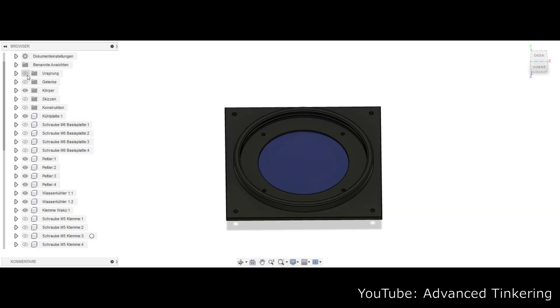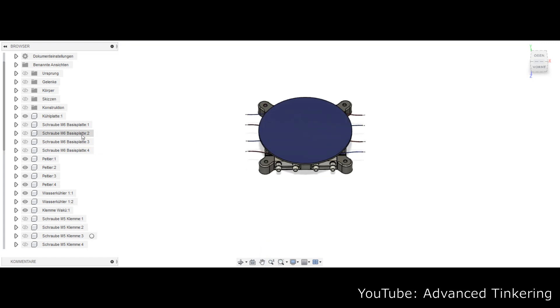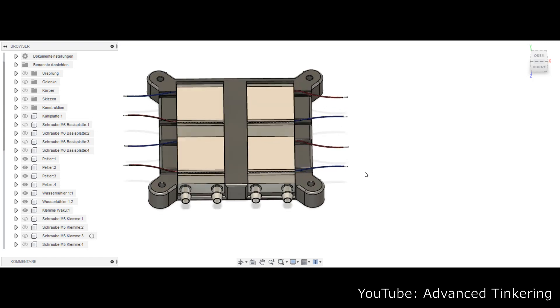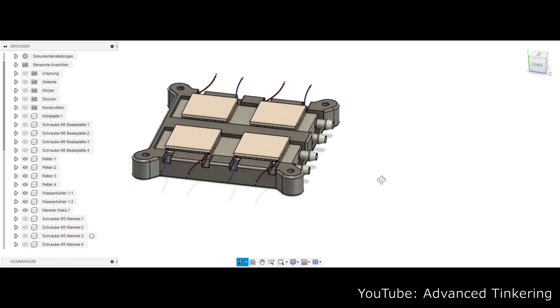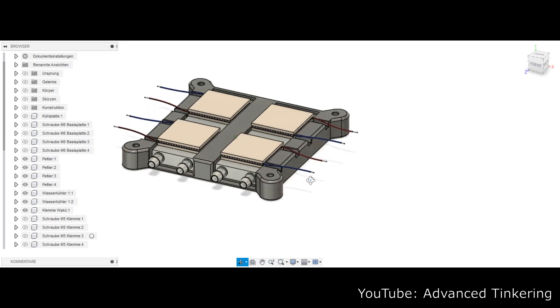The bottom plate of my cloud chamber has a diameter of around 15 centimeters and is cooled by four Peltier elements. The elements I'm using are TEC 2-25-408. These elements are two-stage Peltier elements.